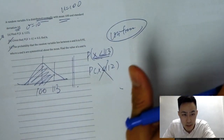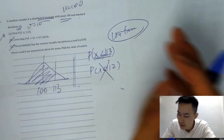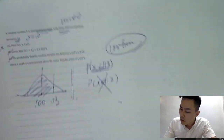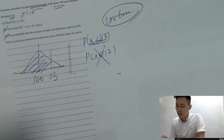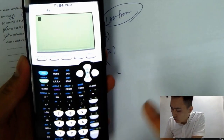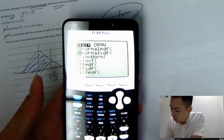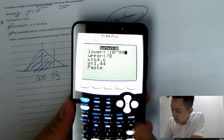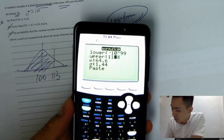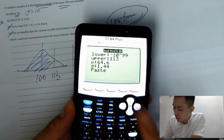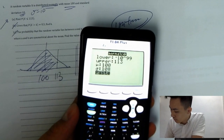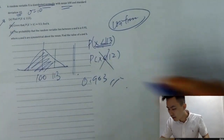That concept is just for understanding — the IB exam won't ask you in detail why continuous data is used in normal distribution. For question A: go to second, Normal CDF. Lower bound is negative 10 to the power 99. Upper bound is 113. Mean is 100 and standard deviation is 10. The answer is 0.903.